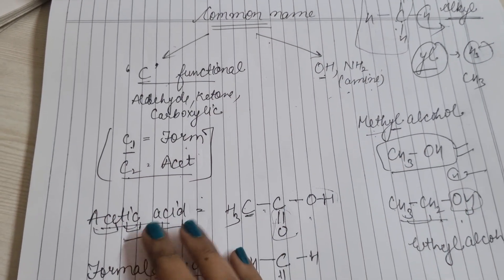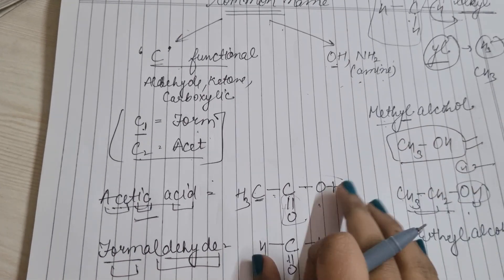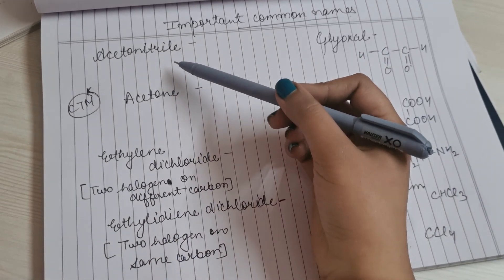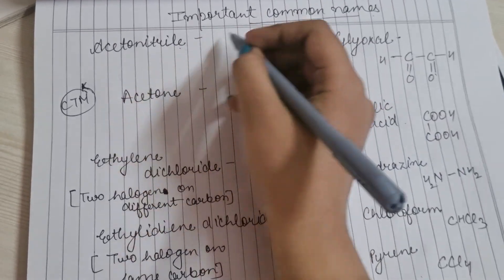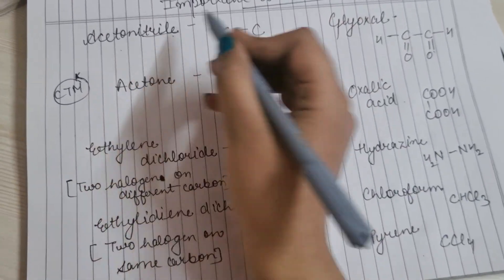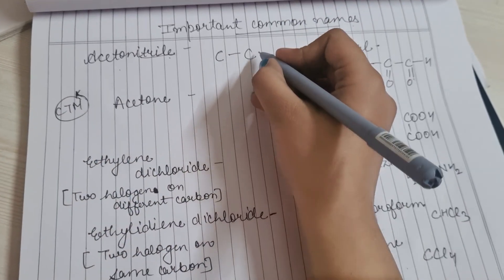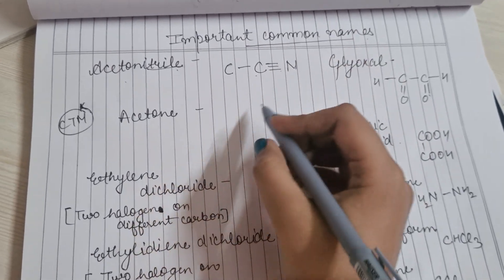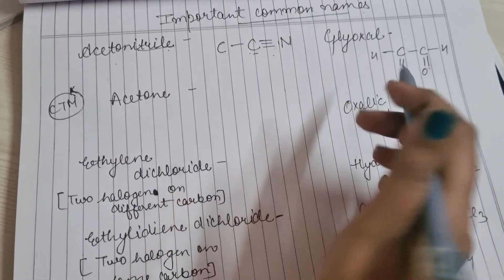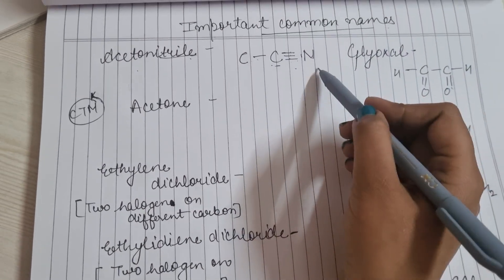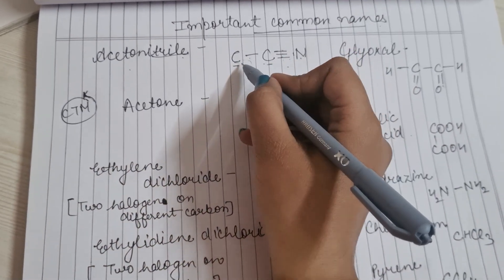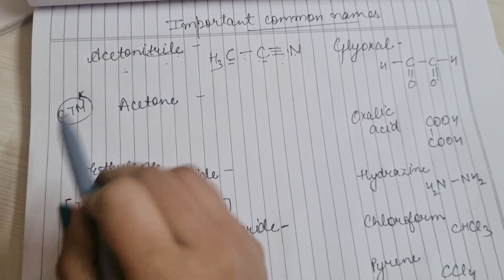Acetonitrile: 'acet' मतलब 2 carbon, 'nitrile' मतलब cyanide — carbon nitrogen के साथ triple bond बनाता है। Triple bond से carbon की 4 valency पूरी हो जाती है, nitrogen की 3 valency भी पूरी हो जाती है। दूसरे carbon के आसपास 3 hydrogen लगाते हैं। This is the structure of acetonitrile।